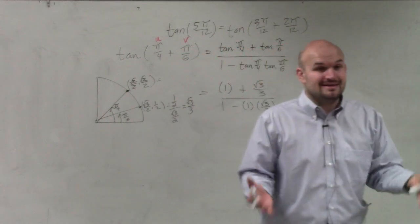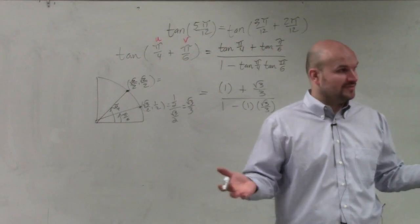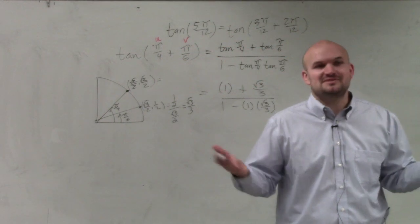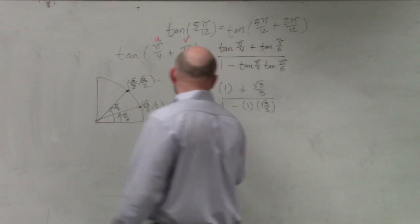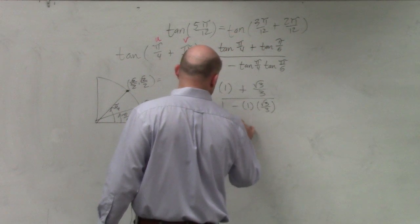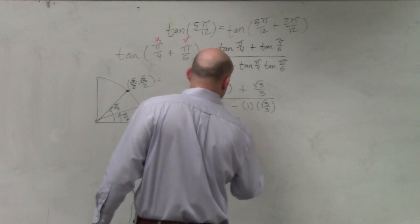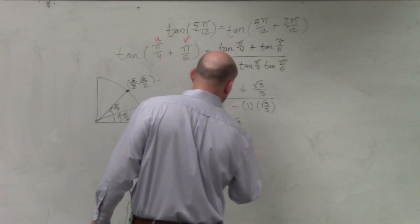Does everybody understand? So now, the difficult part, or the not fun part, is the simplifying. So let's rewrite this as 1 plus square root of 3 over 3 over 1 minus square root of 3 over 3.